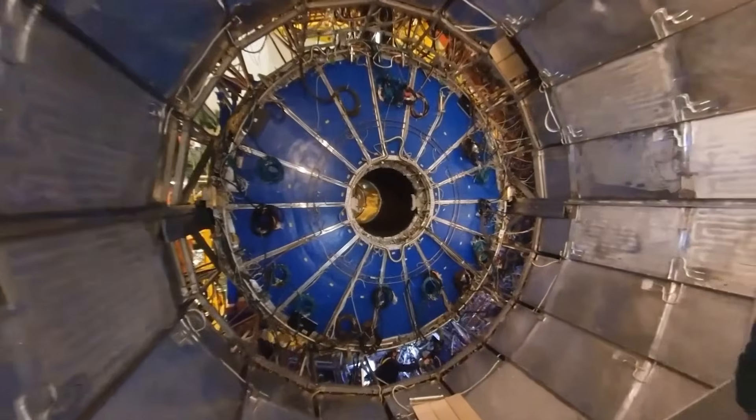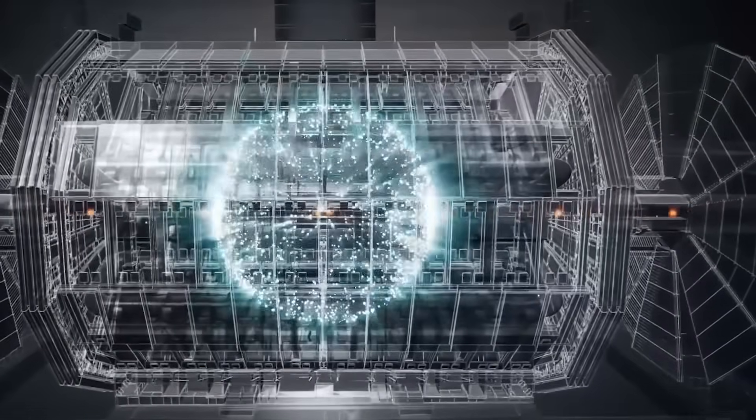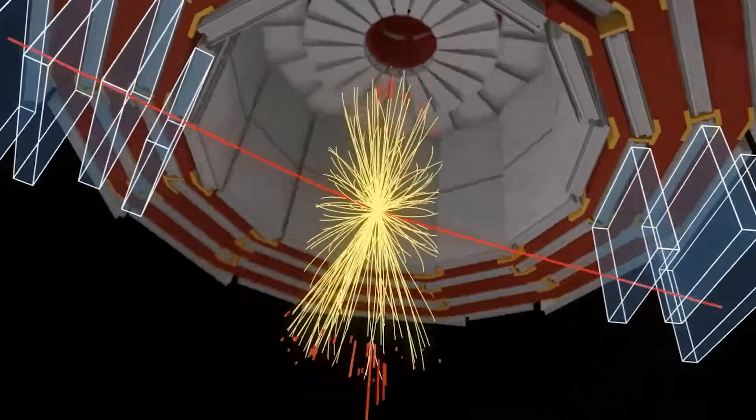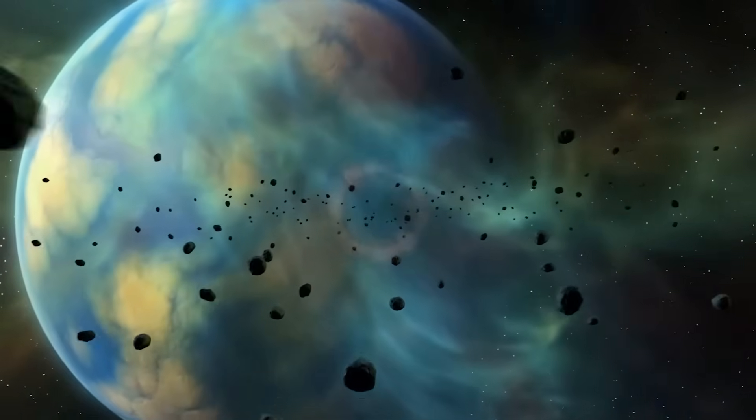When CERN announced its hunt for the Higgs boson, often dubbed the God Particle, the media frenzy made the moment sound apocalyptic. Headlines claimed CERN might destroy the universe by creating something unnatural. Some people even linked the search for the Higgs boson to doomsday prophecies. In July 2012, CERN confirmed the Higgs boson discovery and the world did not end.